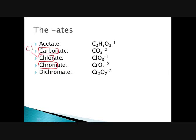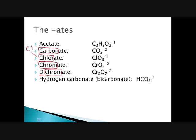Dichromate still contains chromate but there are two of them — it's Cr₂O₇ with a negative two charge. The 'di' in front of chromate helps you remember to put a subscript two after the Cr. Hydrogen carbonate is also called bicarbonate — the two names are interchangeable. Hydrogen carbonate tells you it starts with H and C, then it's O₃ with a negative one charge. If you've heard of sodium bicarbonate — baking soda — it contains this polyatomic ion.